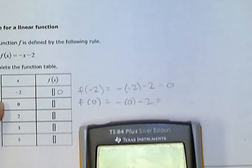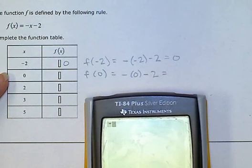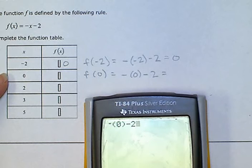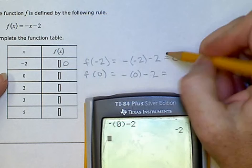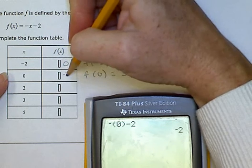So I use the negative button, parenthesis, 0, parenthesis, minus 2. Or I could know that negative 0 is still 0. Minus 2 equals negative 2. That means this box is negative 2.